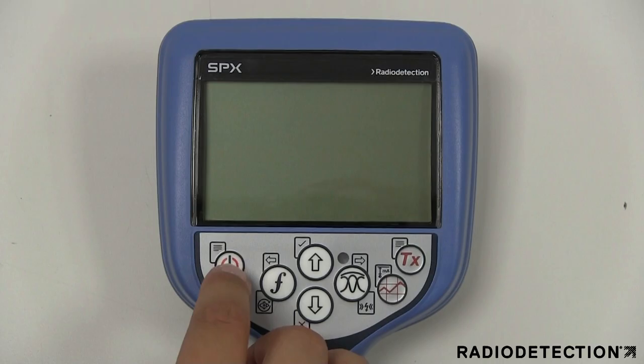The Precision Locator settings are accessed via the menu where it is possible to change settings according to your personal preferences and operating requirements.